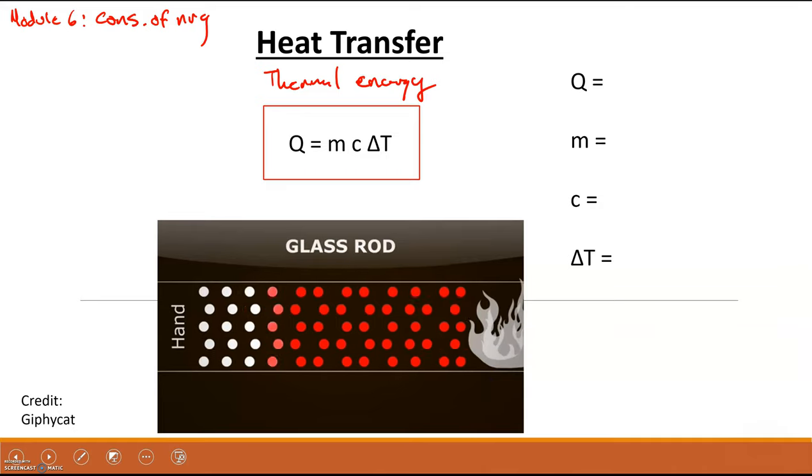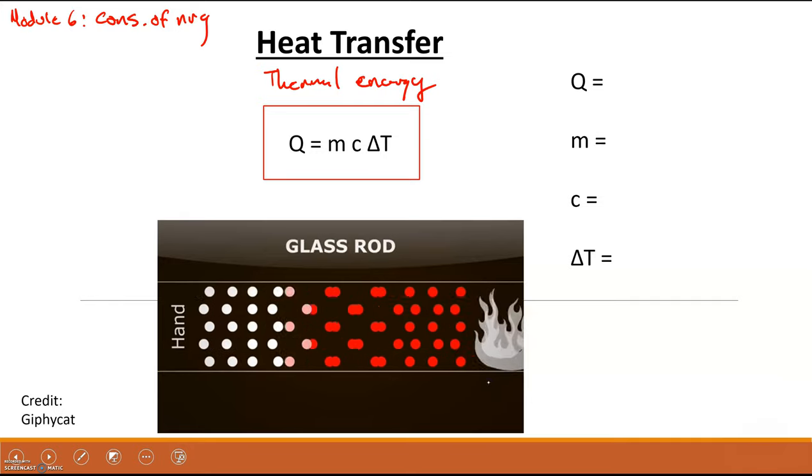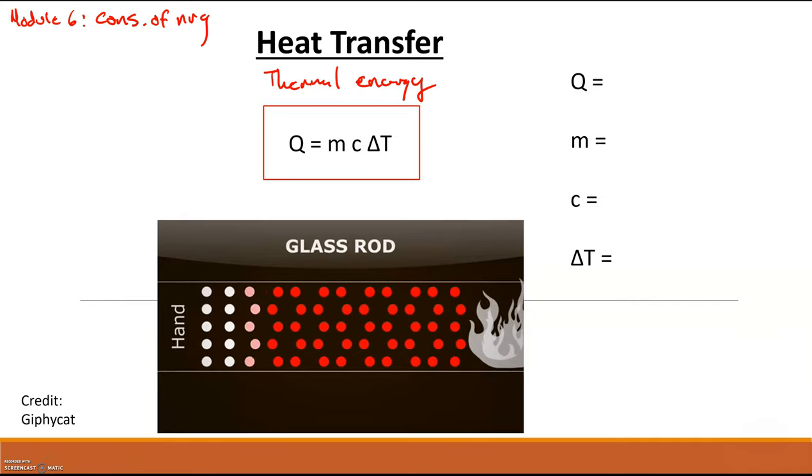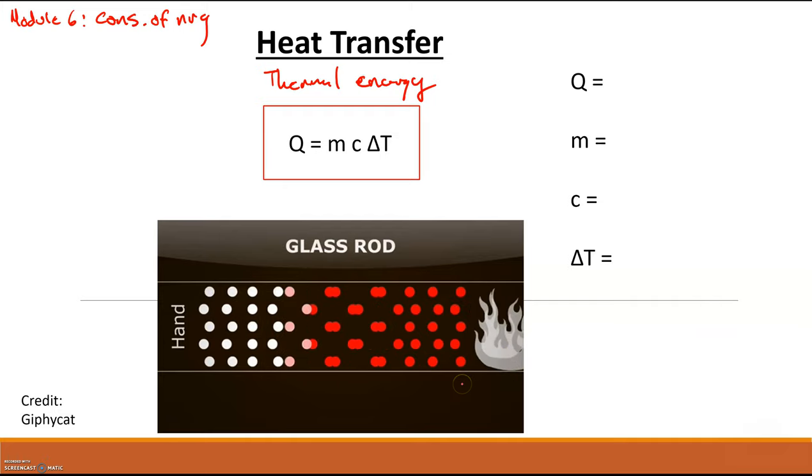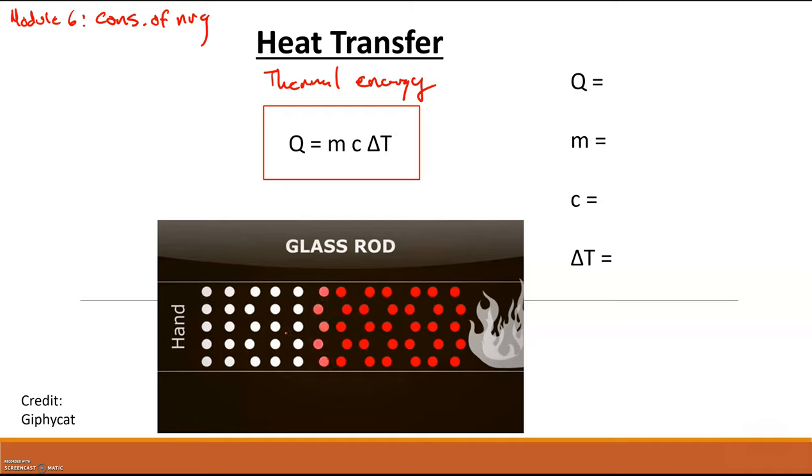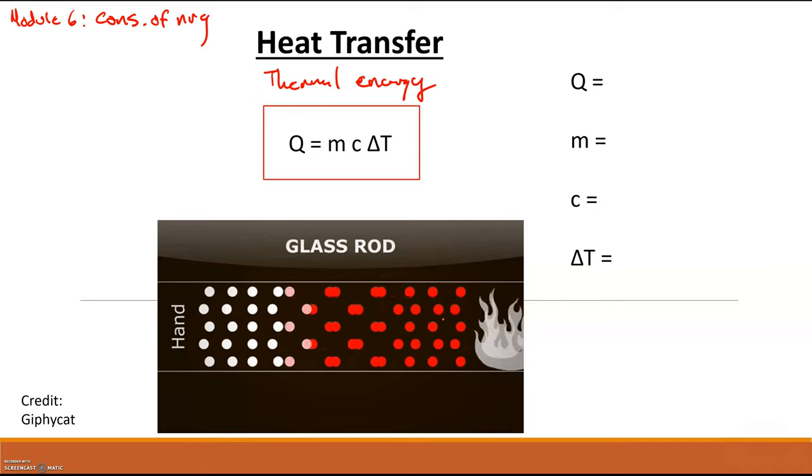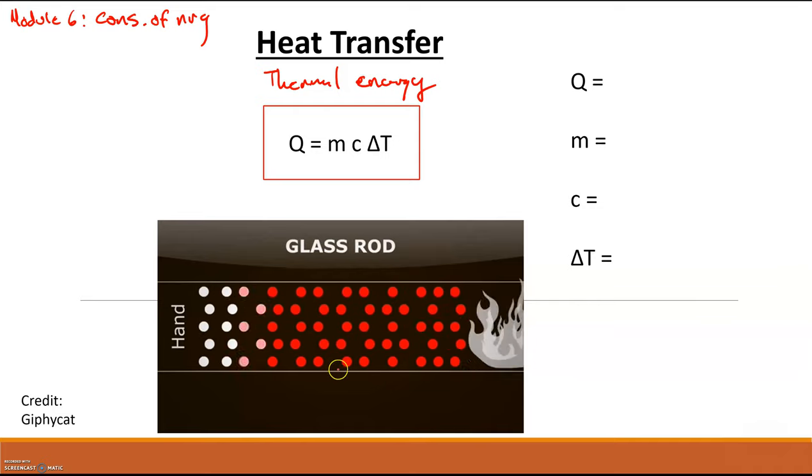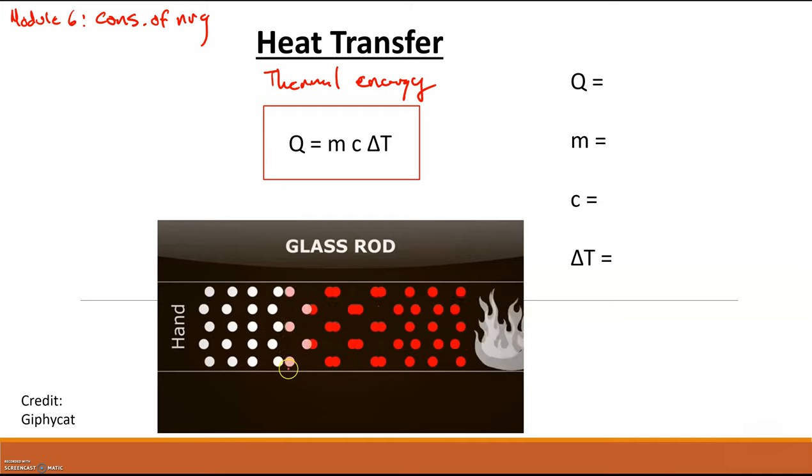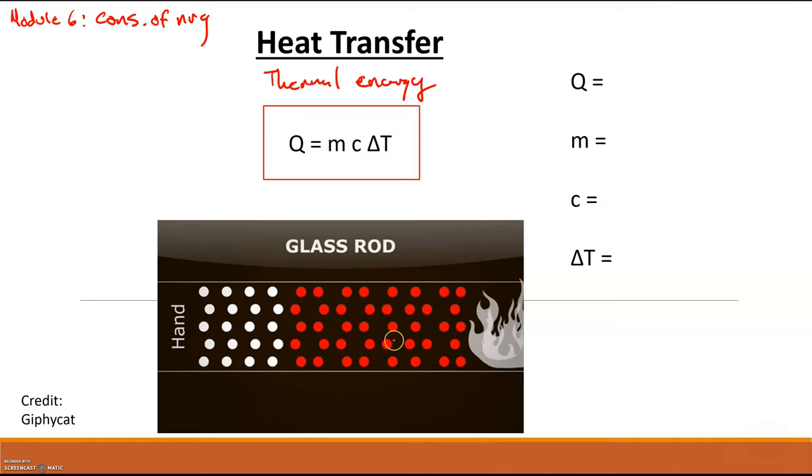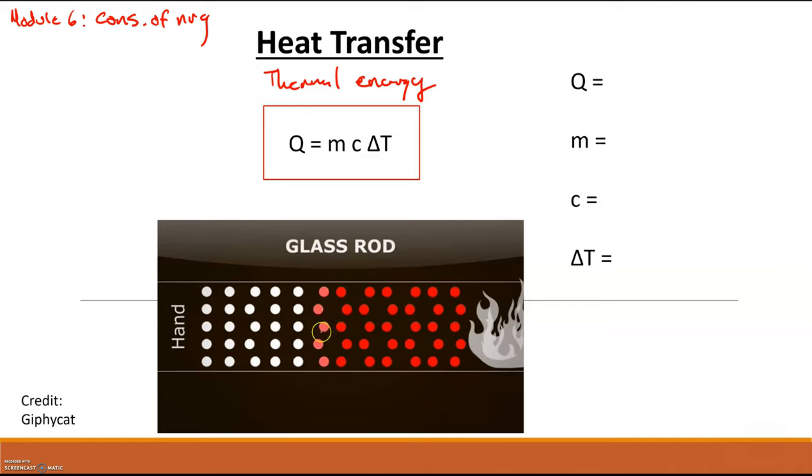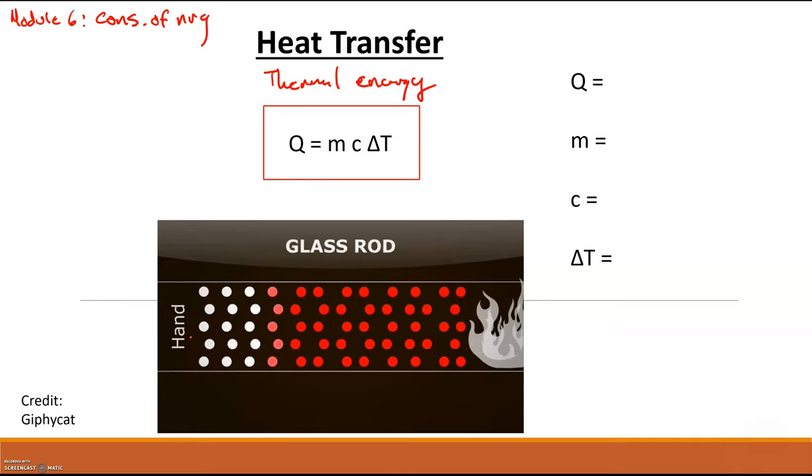And so that's what this little diagram down here is portraying. We have this fire and then we have all the molecules making up the glass rod and then we have our hand on the glass rod. And so the energy, you can see we have a lot of thermal energy over here on the right hand side and that is subsequently transferring that thermal energy towards the left towards these molecules that have a lower temperature. And so it's transferring this energy to increase the temperature further down the glass rod.